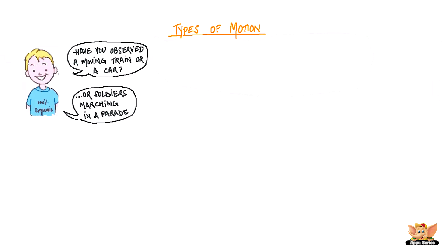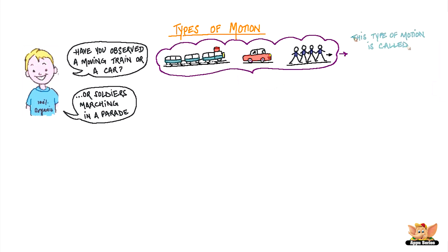What is the similarity that you find in their movements? A train moves on a lined track. Soldiers parade in a line. And a car moves in a line on the road. So in all of these examples we see that objects move along a straight line. This type of motion is called rectilinear motion.